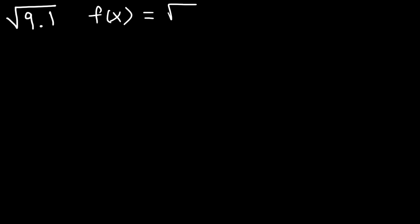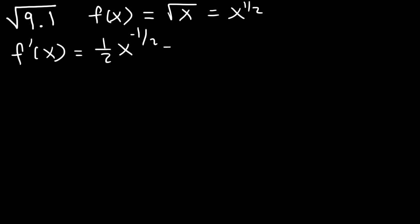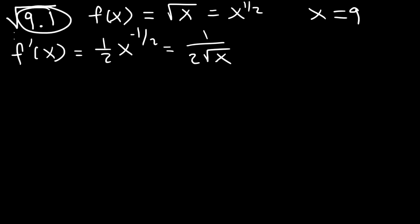Let's try this one. Estimate the square root of 9.1. First, we need to identify the function. The function is going to be the square root of x. Now let's find the first derivative. This is x raised to the 1/2, and that's going to be 1/2 x to the negative 1/2, which we can rewrite as 1 over 2 square root x. Now x1 we can say is 9, because 9 is close to 9.1. So let's evaluate f of 9. F of 9 is the square root of 9, which is 3.